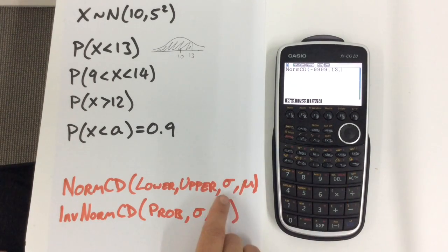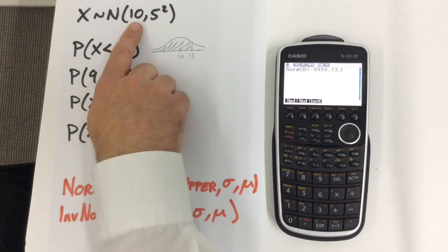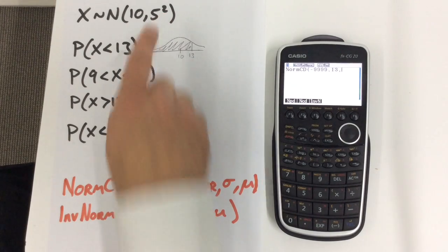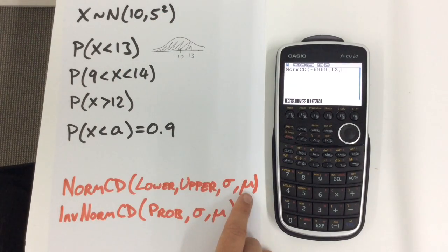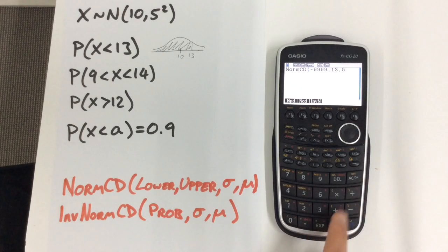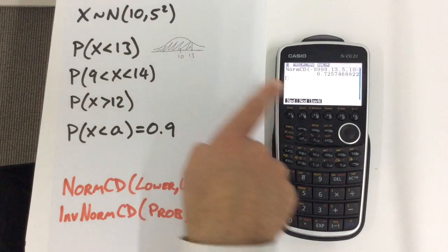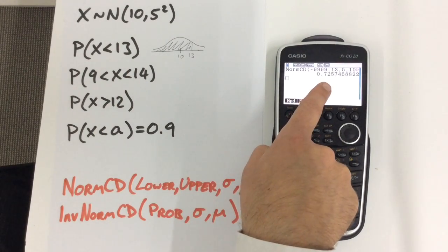Comma again. Now this is the standard deviation. Notice that we generally give the mean and then the variance, but in this place we're actually putting the standard deviation before the mean. So I'm going to put 5 and the mean is 10. Close off the brackets and there is our answer. So the probability X is less than 13 for this distribution is 0.7257.